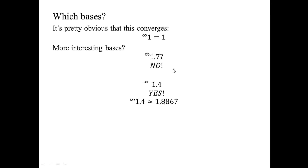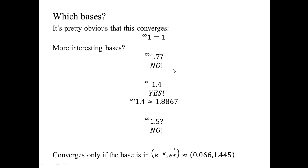Check this for yourself on the calculator to convince yourself it converges. How about 1.5? Even though it's pretty close to 1.4, 1.5 will not converge. It turns out the base must be within the region of e to the negative e and e to the power of 1/e, which is approximately 0.066 to 1.445. So 1.4 is inside that interval while 1.5 is just above it.